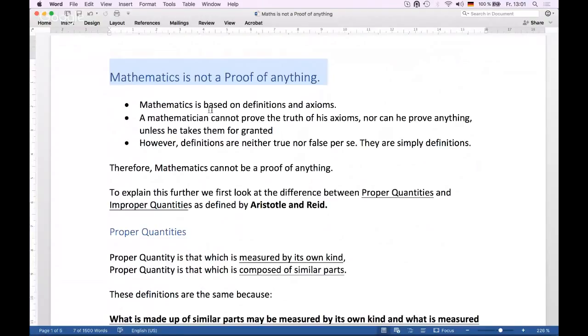Mathematics, being a formal science, is based on definitions and axioms. A mathematician cannot prove the truth of his axioms, nor can he prove anything unless he takes them for granted. So it doesn't matter what he starts with. He has to believe in his axioms to believe in his conclusions.